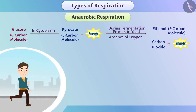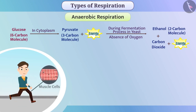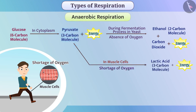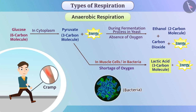Sometimes, while doing work, the need for energy increases. In such a situation, there is often a shortage of oxygen in the muscle cells. To generate energy with less oxygen, these cells break down the pyruvate into the 3-carbon molecule lactic acid. Formation of lactic acid can cause cramps. We can see this method of generating energy in some bacteria as well.